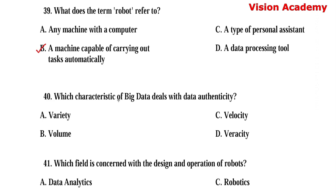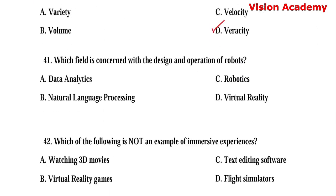Question number 40. Which characteristic of big data deals with data authenticity? Option A: Variety. Option B: Volume. Option C: Velocity. Option D: Veracity. Here, option D, veracity, is the right answer.